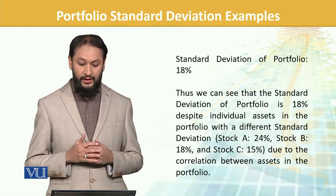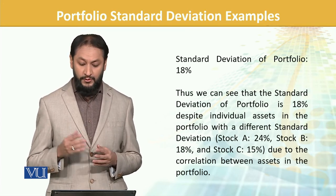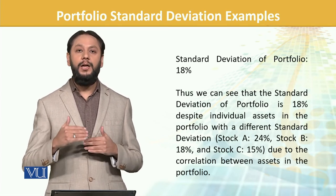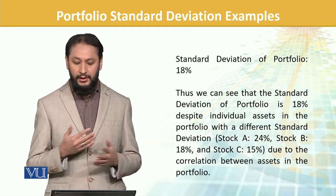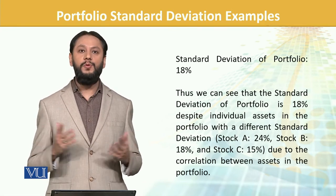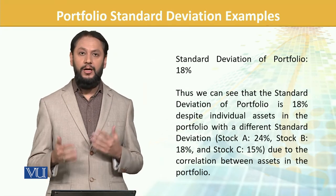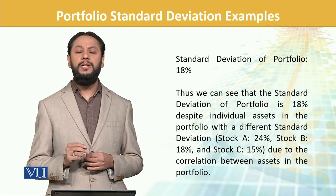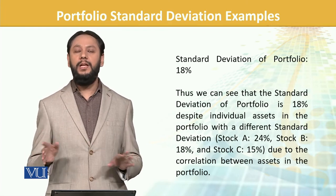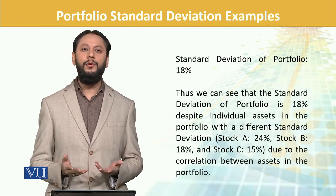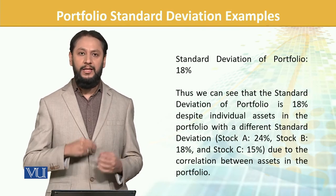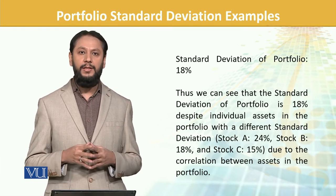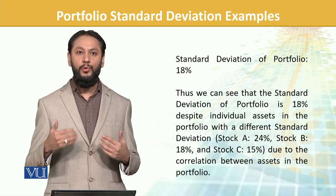We use these in our specific formula and the standard deviation of the portfolio comes to 18. Despite individual assets having a high of 24, we are at a lower level because of the diversification benefit. If some problems arise, we revise once or twice and things become clearer.